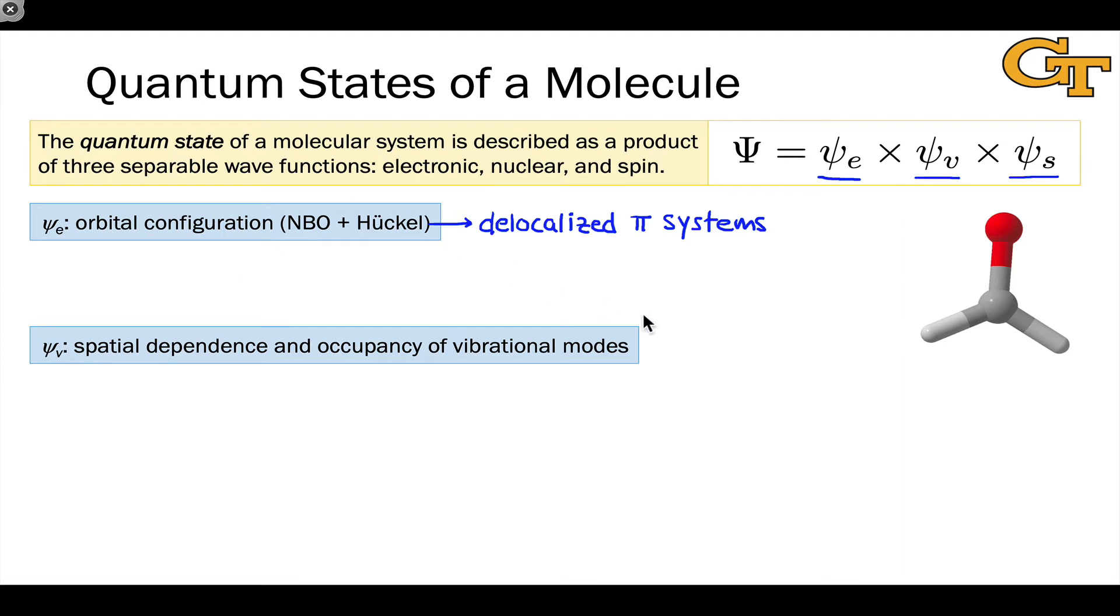The vibrational wave function includes the spatial dependencies and the occupancies of all vibrational modes. We'll get the vibrational wave function's values over space and essentially how many quanta of vibrational excitation we have associated with each of those vibrational modes. Very often, we only think about one, and there are good reasons for that.